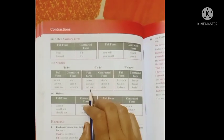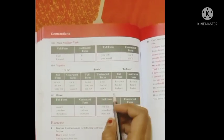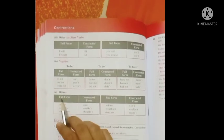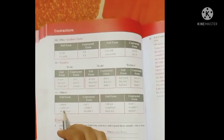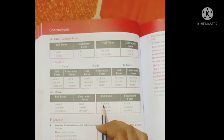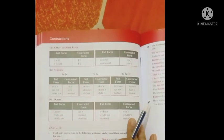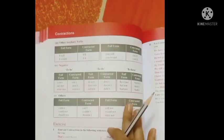Did not, didn't. To have: have not, haven't. Has not, hasn't. Others: cannot, can't. Could not, couldn't. Should not, shouldn't. Will not, won't. So students, read this carefully. You can take your time to prepare this.